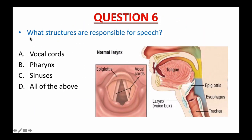Question number 6: What structures are responsible for speech? A. Vocal cords, B. Pharynx, C. Sinuses, D. All of the above. If you picked D — all of the above — that is the best answer. The ligaments within the vocal cords stretch into the airway, which constitutes the glottis. When air hits this area, vibration produces sound to create understandable speech. The pharynx, mouth, nasal cavity, and sinuses provide a type of echo chamber.